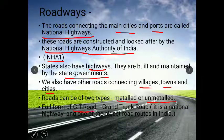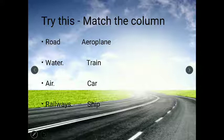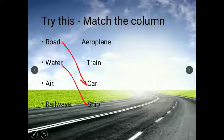The full form of GT Road is Grand Trunk Road. It is a national highway and one of the oldest road routes in India. Now children, try to match the means of transport: on roads we have cars, on water we have ships, in the air we have aeroplanes, and on railways we have trains.